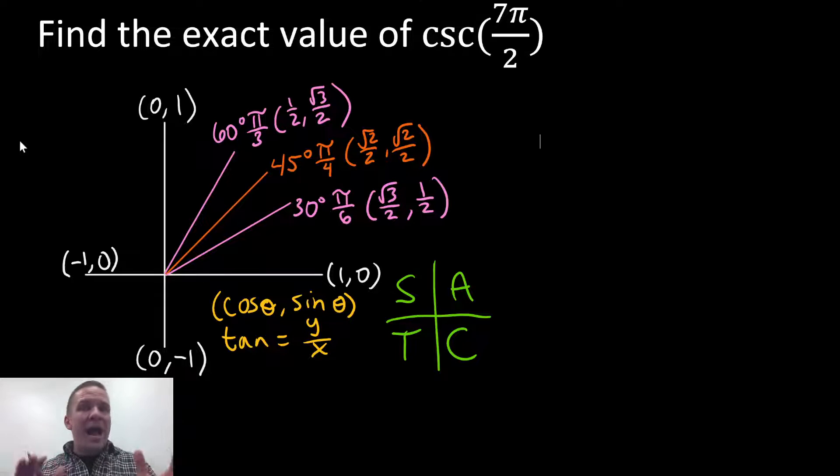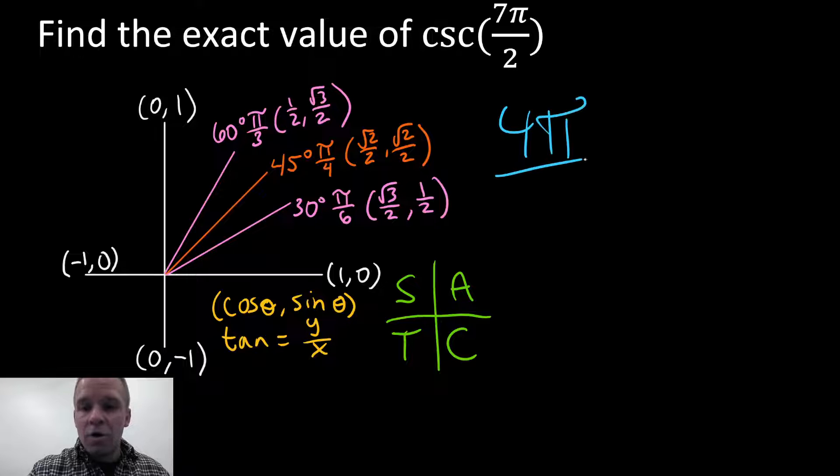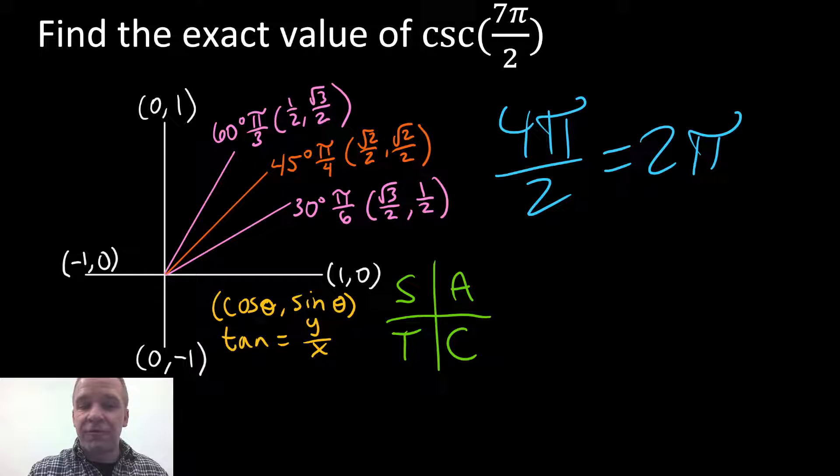So first off, we gotta find out where we're at with seven pi over two. So four pi over two is a full rotation, right? Four pi over two equals two pi. So that's a full rotation.